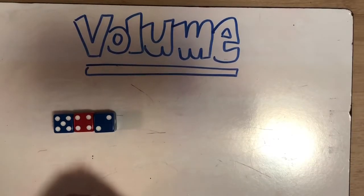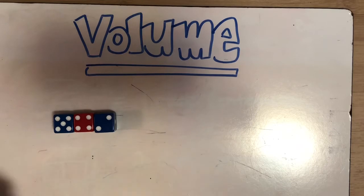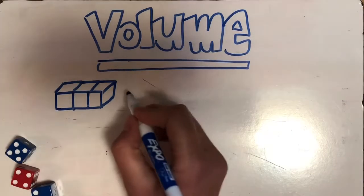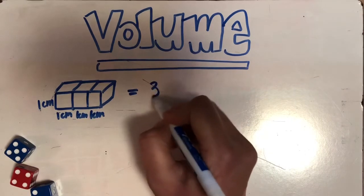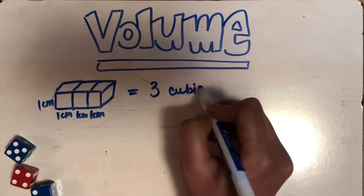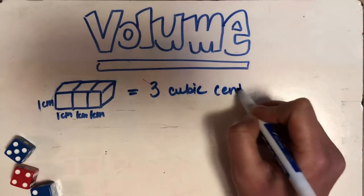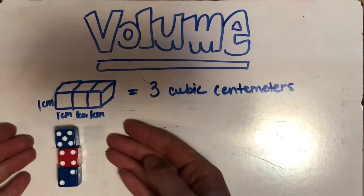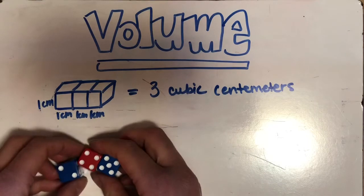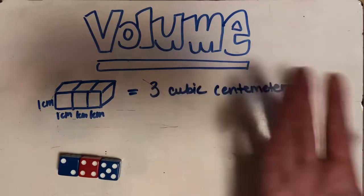Now let's say I have three dice all together. I have three cubic centimeters. Three blocks. It's this way. Doesn't matter, I still have three. It doesn't matter which direction I change these, I'm still gonna have three cubes.